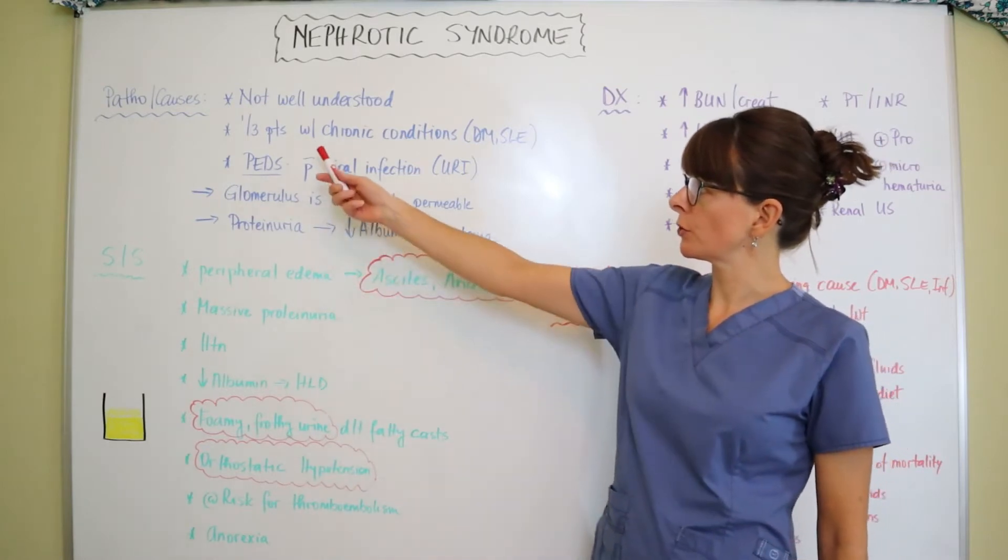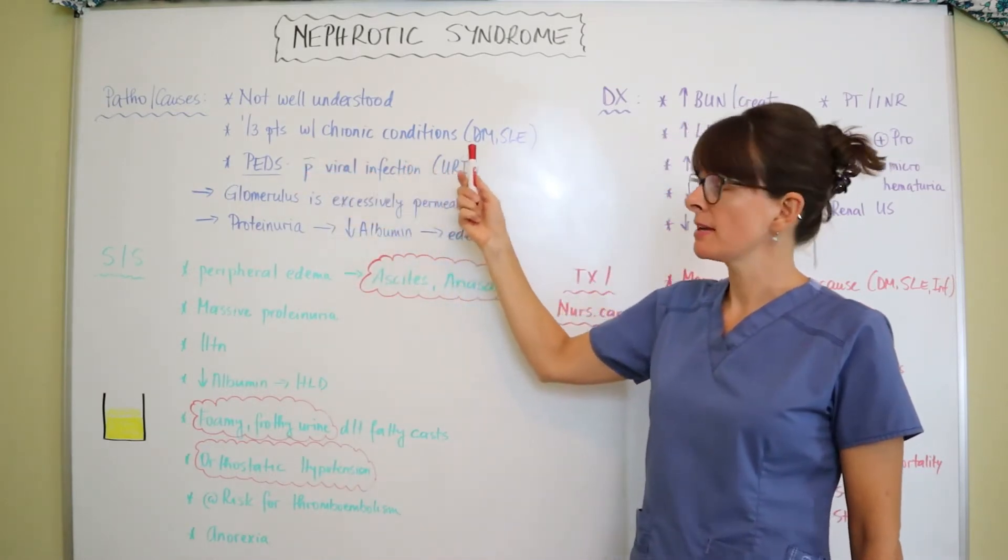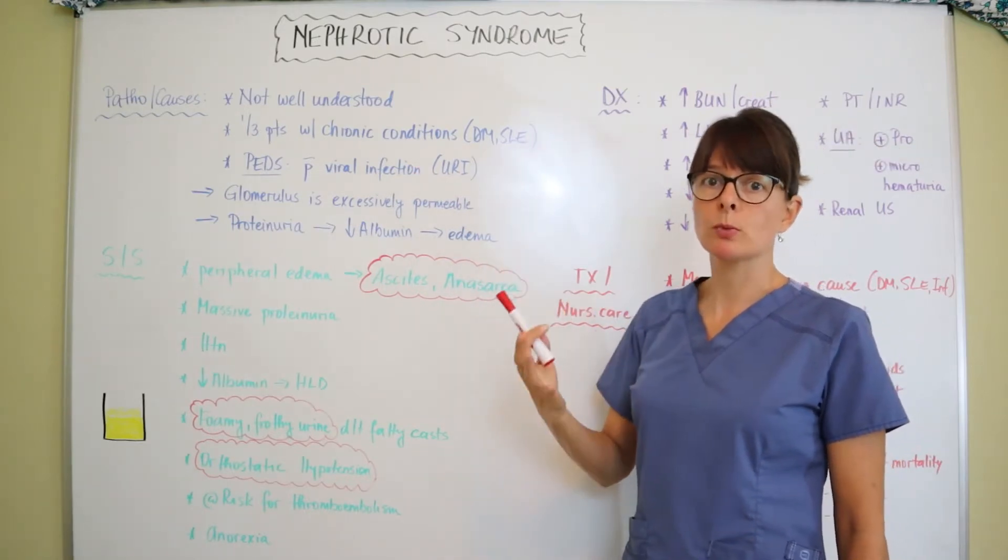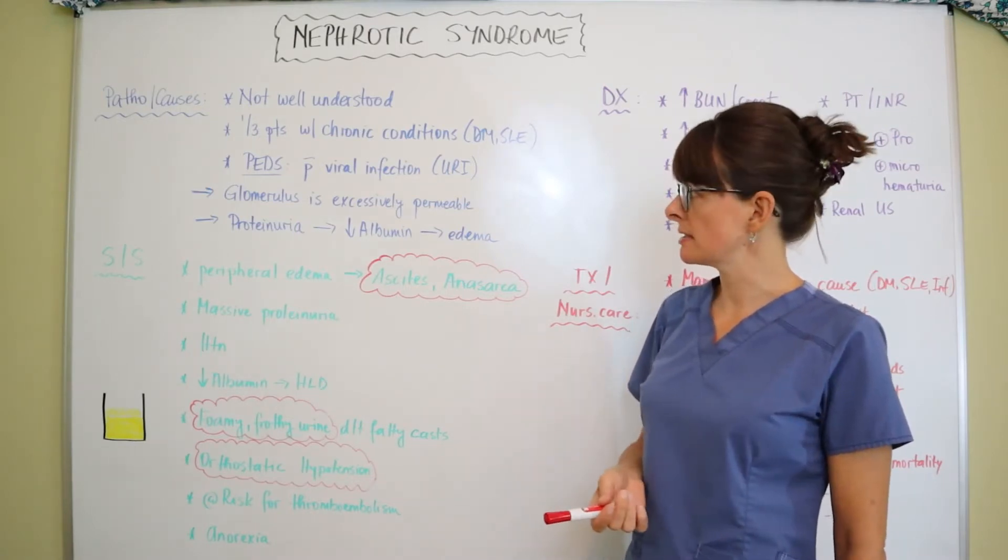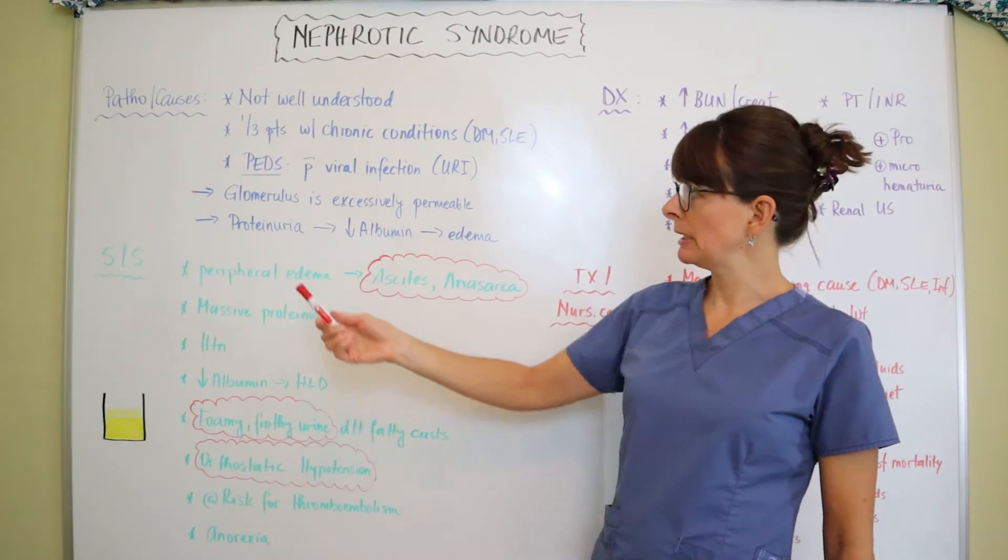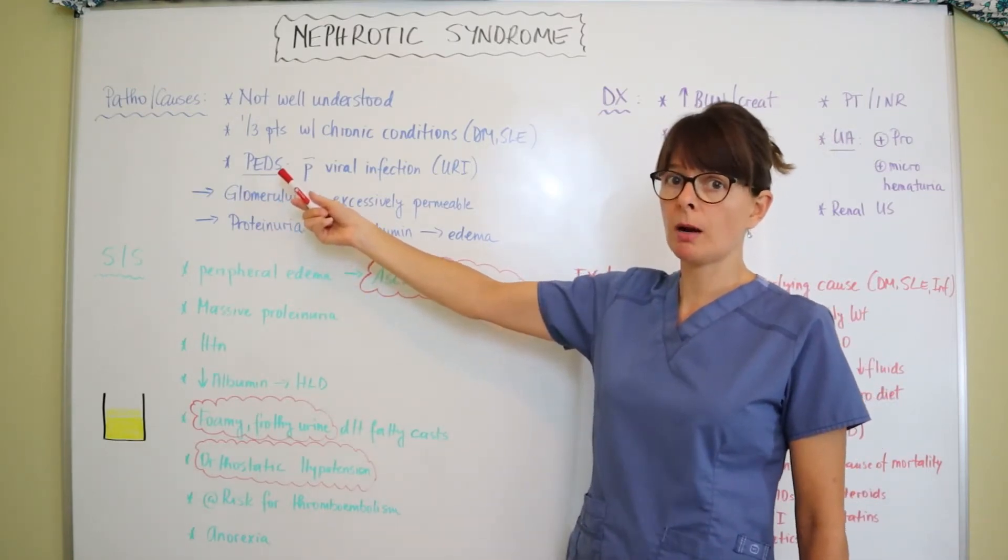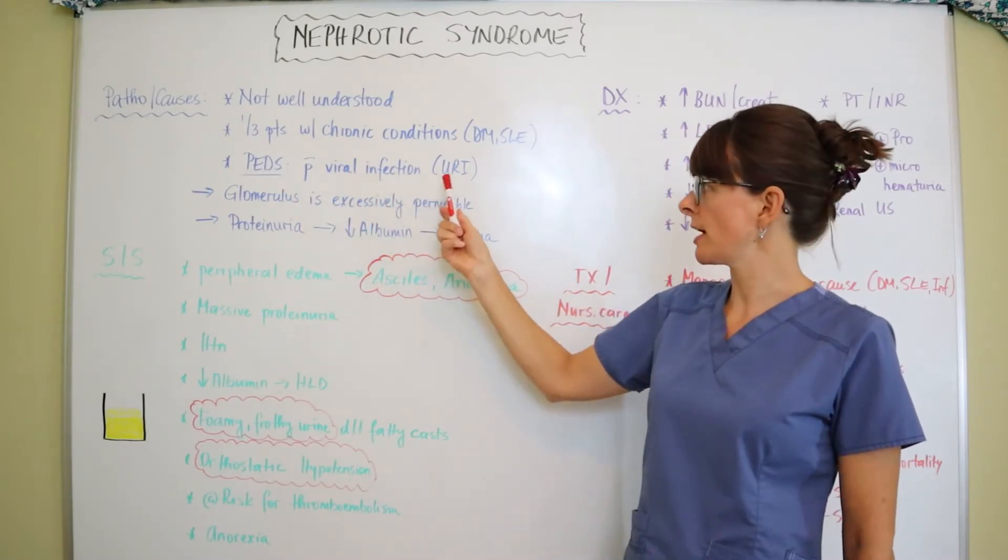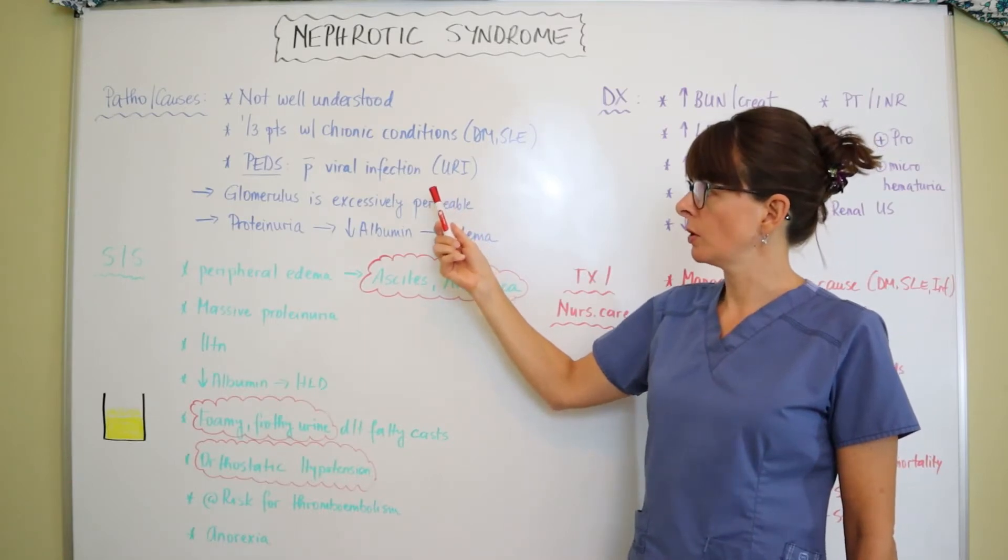It occurs in one-third of patients with chronic conditions such as diabetes and systemic lupus that can affect the kidney when there are long-term issues with these diseases. In pediatrics, it's actually fairly common. It's the most common complication after a simple viral infection such as an upper respiratory infection.